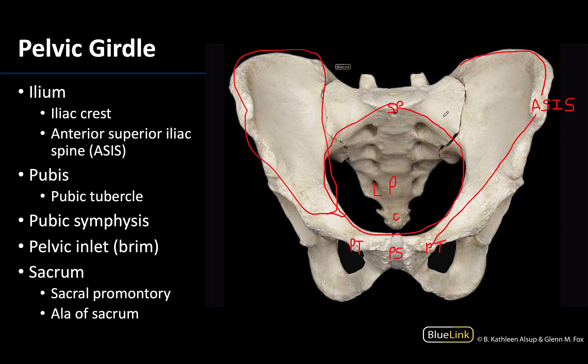Last but not least are the ala of the sacrum. These are the wing-like extensions on either side of the sacral promontory, important in terms of the superior lateral portions of the sacrum.